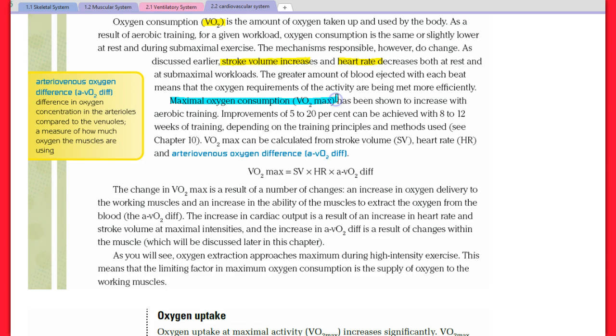The greater the amount of blood ejected with each beat means that the oxygen required for the activity is being met with more efficiency, hence heart rate can decrease because stroke volume has increased. VO2 max has been shown to increase with aerobic training. Improvements of 5 to 20% can be achieved with 8 to 12 weeks of aerobic training. VO2 max equals stroke volume times heart rate times AVO2 difference.